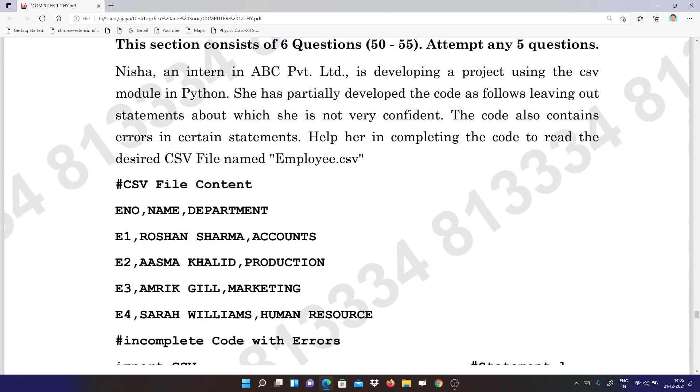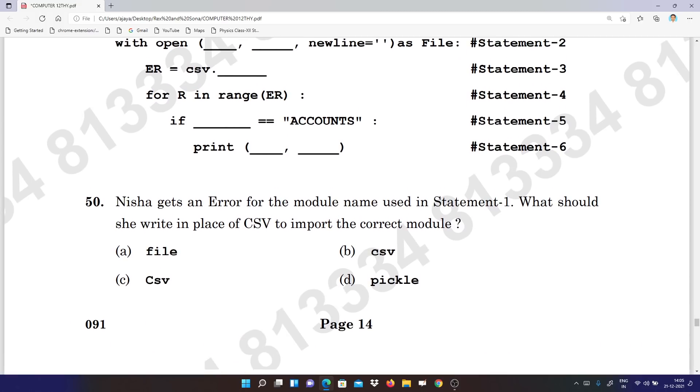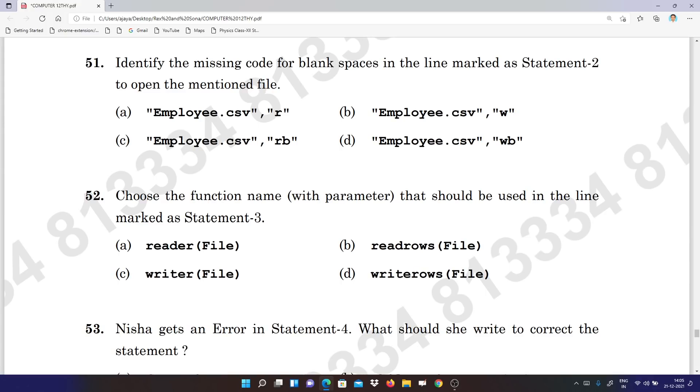Now we are coming to Section C. In Section C you can see the passage is given here. After reading this one we can go to question number fifty. Question number fifty, you got the answer, it's B. Fifty-one: A. Fifty-two also A.